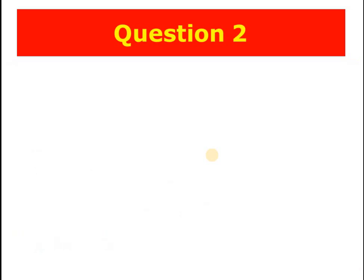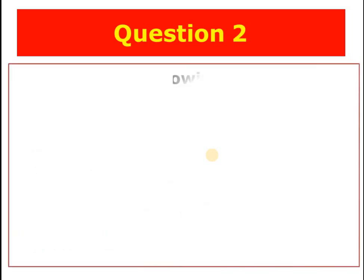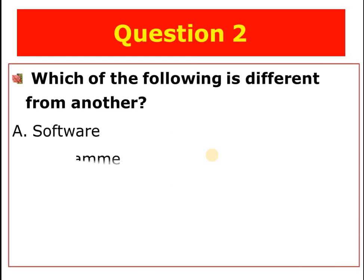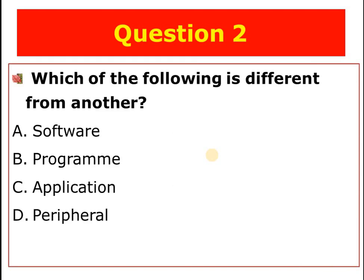Question number two: Among the following alternatives, which one is different from the others? A) Software, B) Program, C) Application, D) Peripheral. The answer is D — peripheral is different from the other parts of the computer.